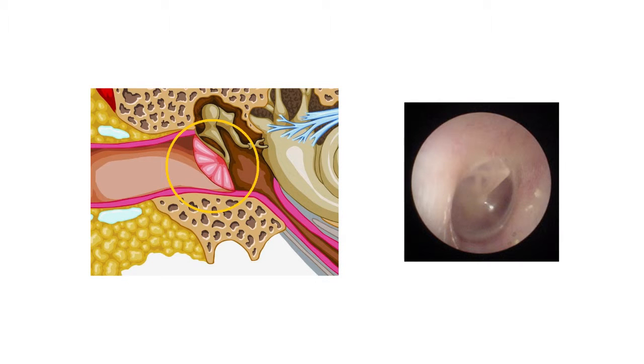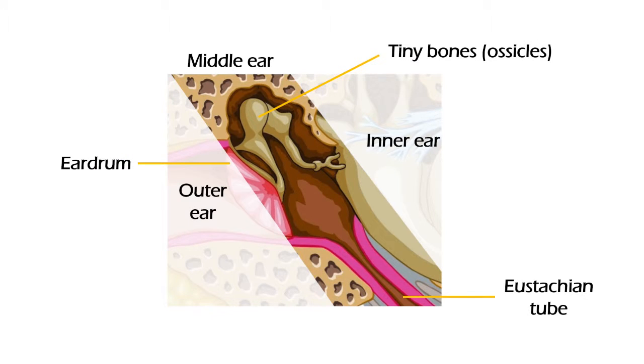The eardrum is a membrane which vibrates according to the pressure variations that impact on it. The middle ear is an air chamber with small bones, whose function is to amplify the vibrations before being transferred to the inner ear. This is necessary since the inner ear is full of a thick liquid, so the vibrations need to be stronger.